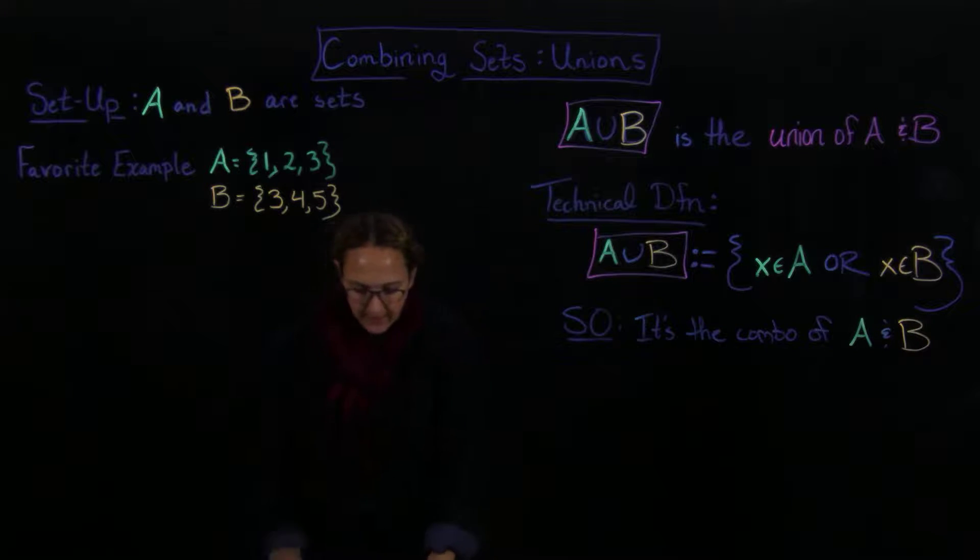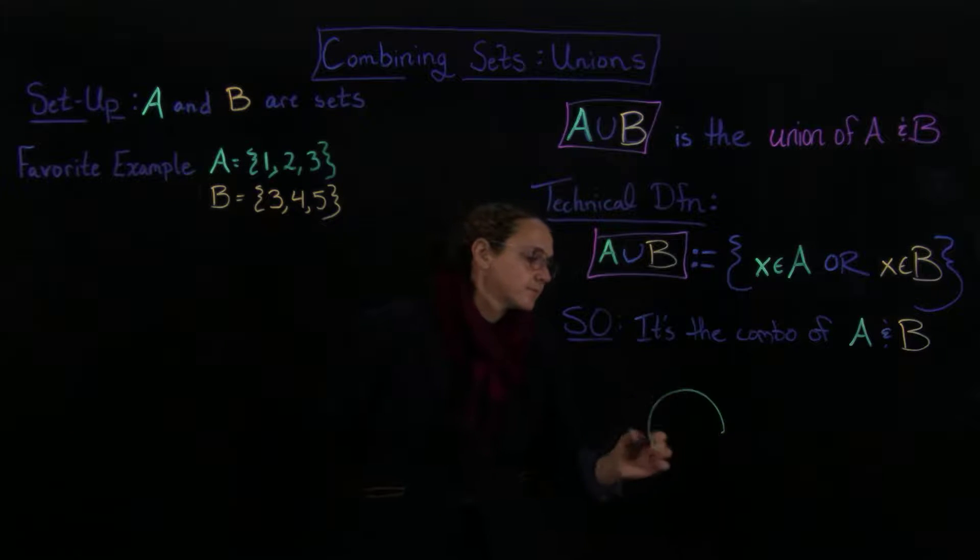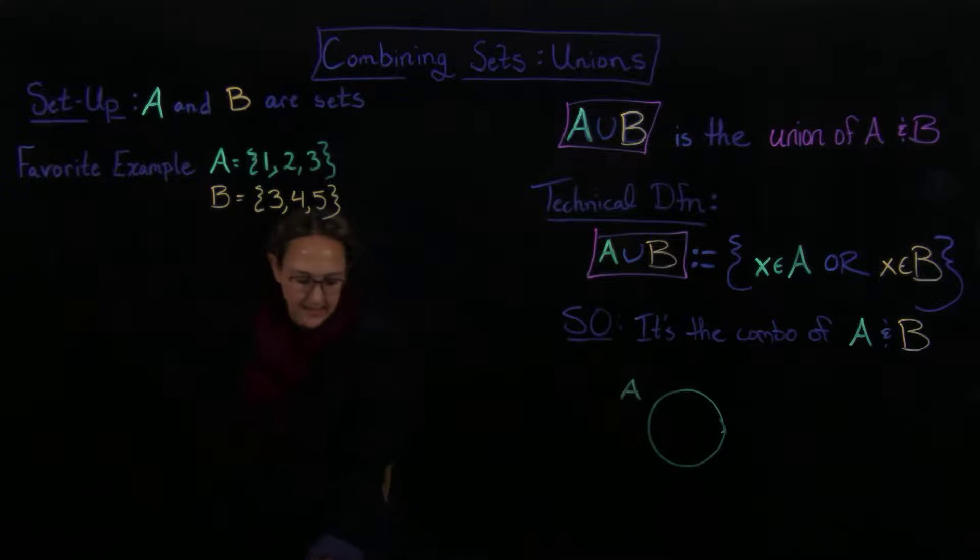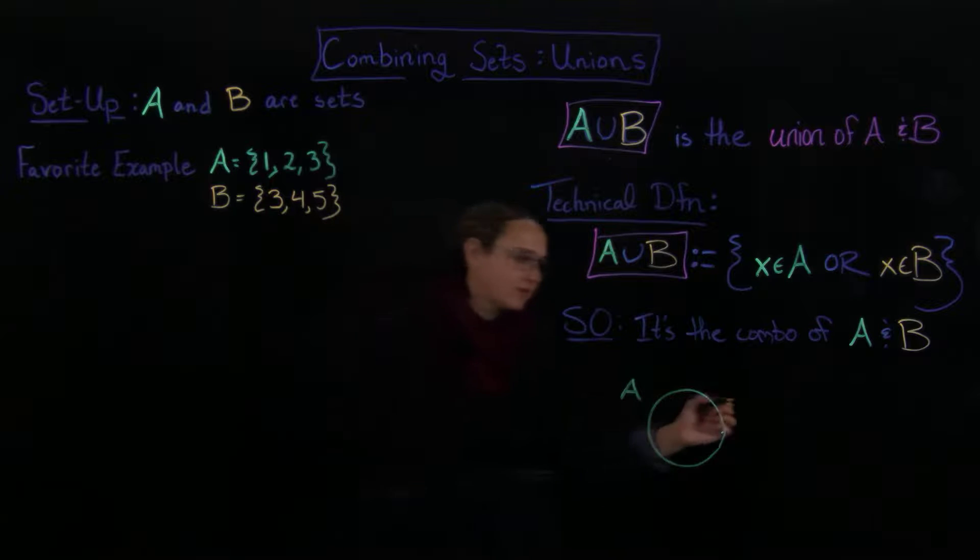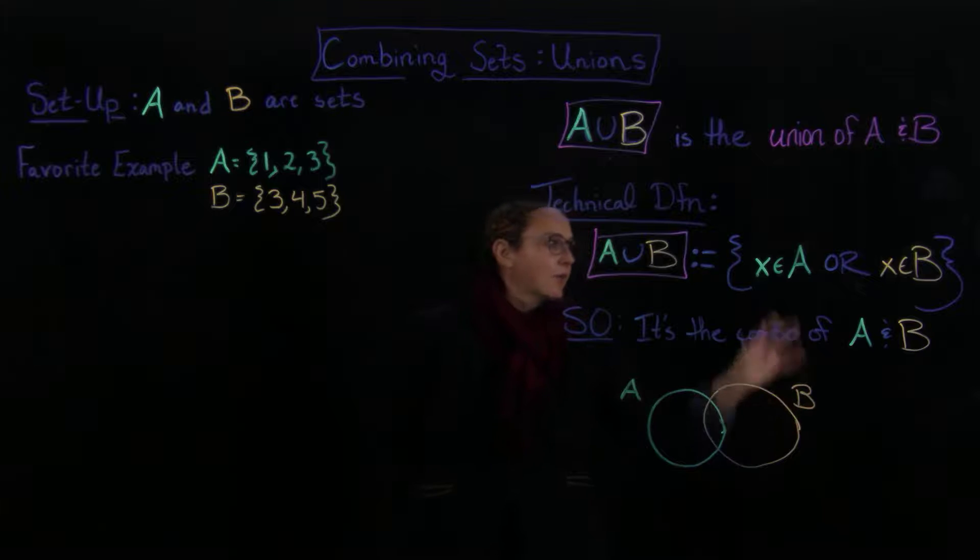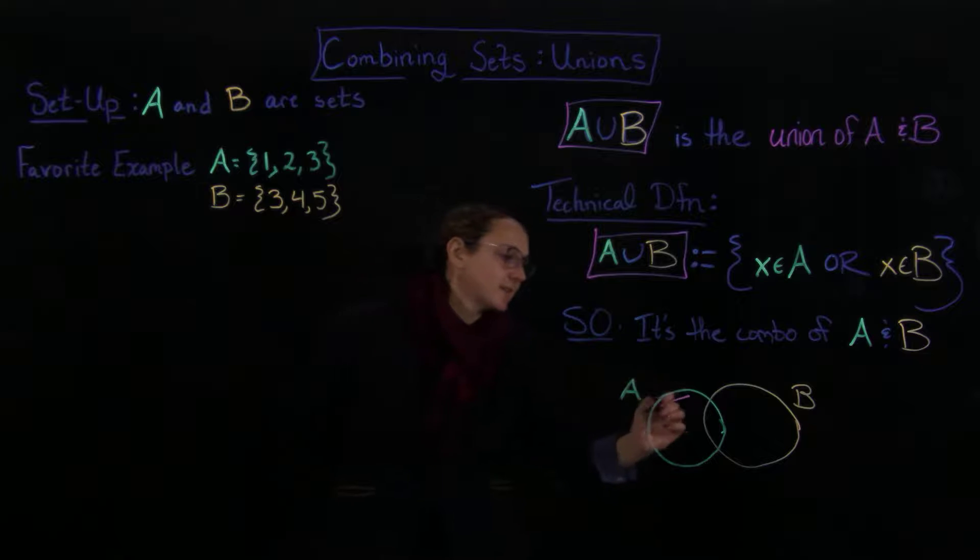So if I had here, I have my A here. And I have, some people like these Venn diagrams, so it's good to use them. It's going to give you more than one way. And then we have our B here. Well, we have to include everything that's in A, so that everything that's in A ends up in the union.